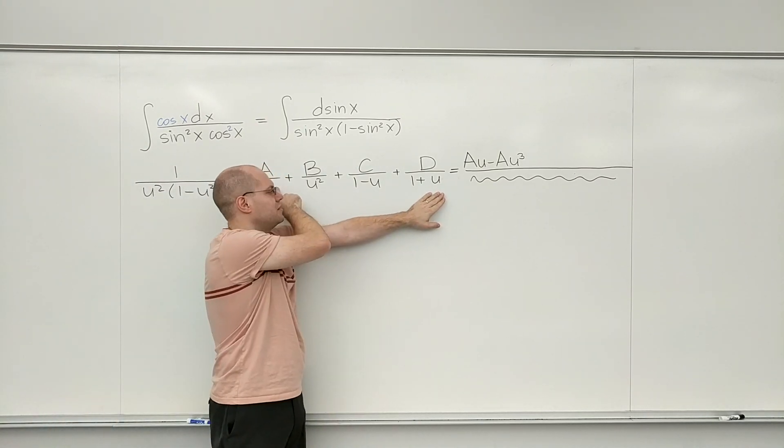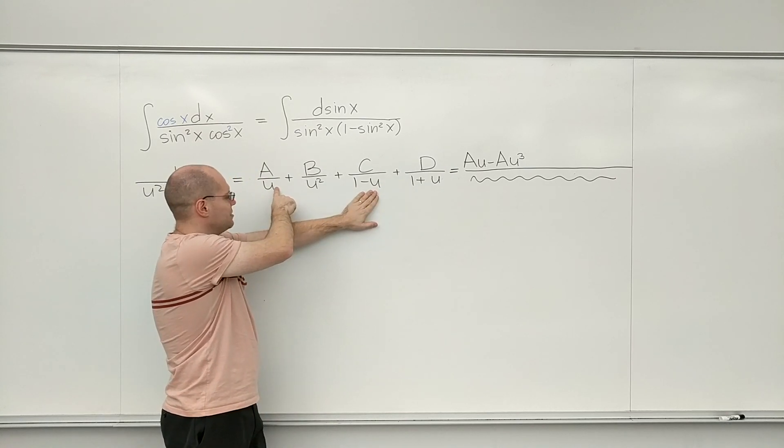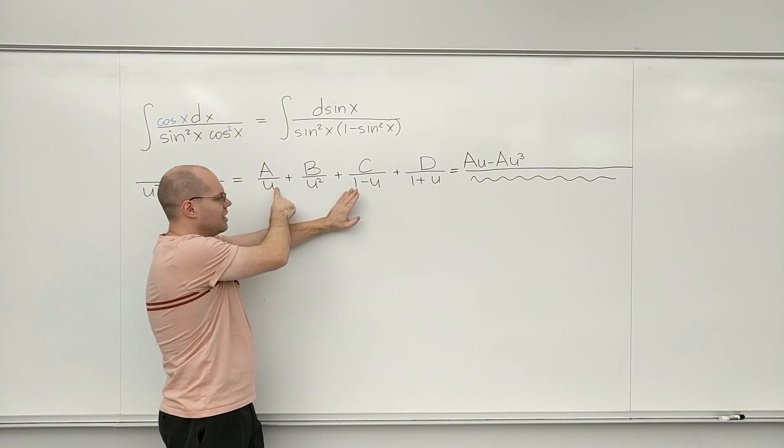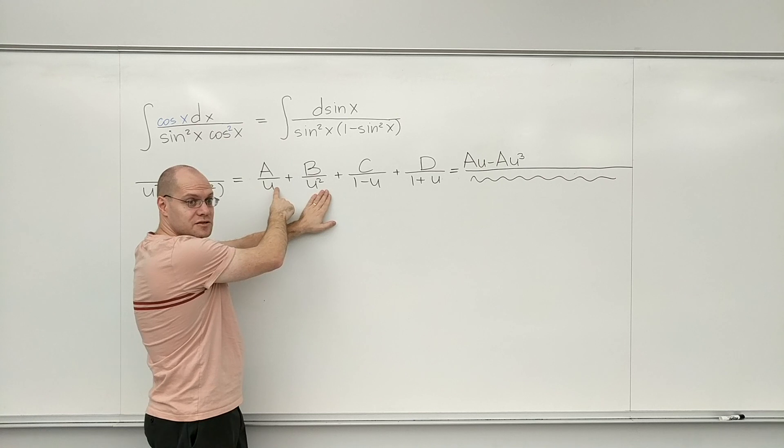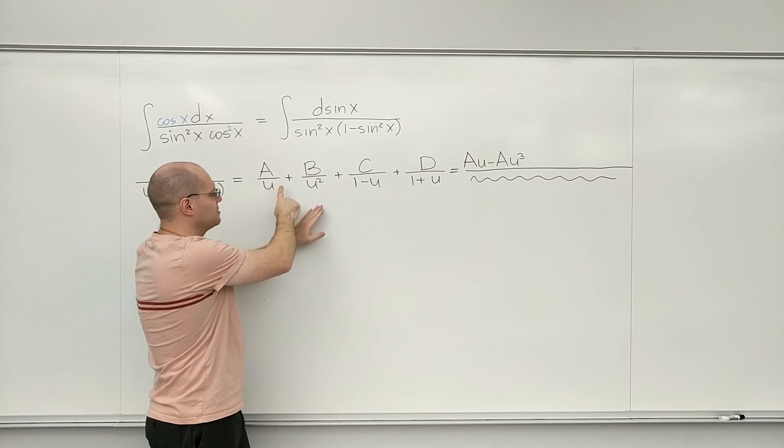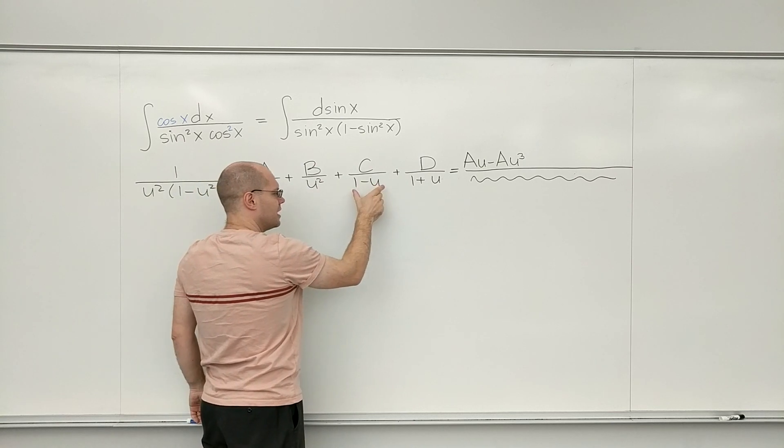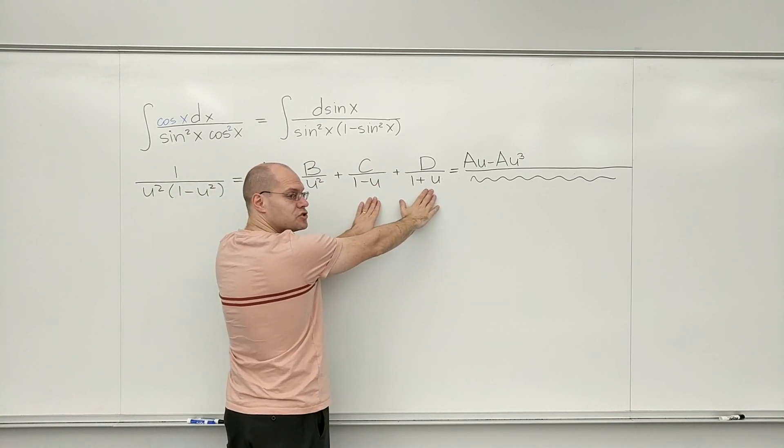definitely missing from here, 1 minus u, definitely missing from here, and also u. This is all a matter of combining fractions. So this will need to be multiplied by u times 1 minus u squared.